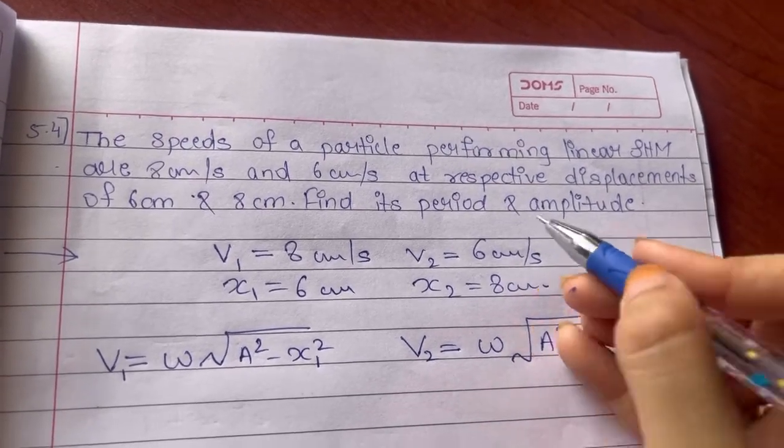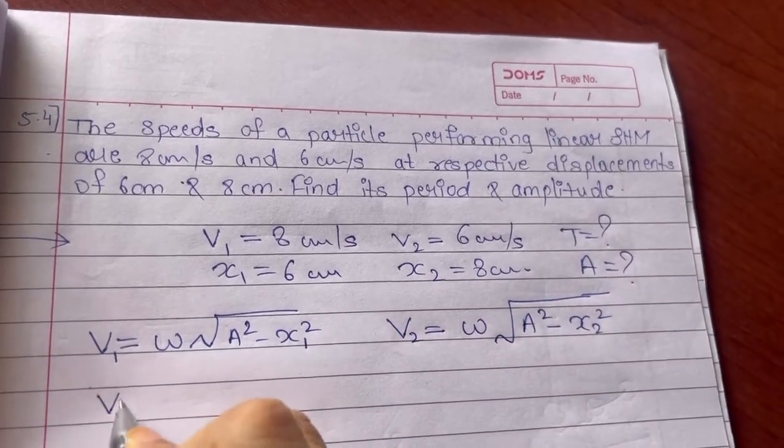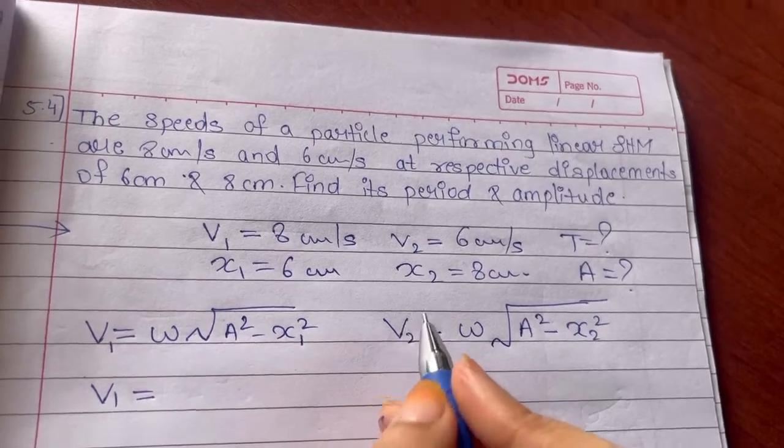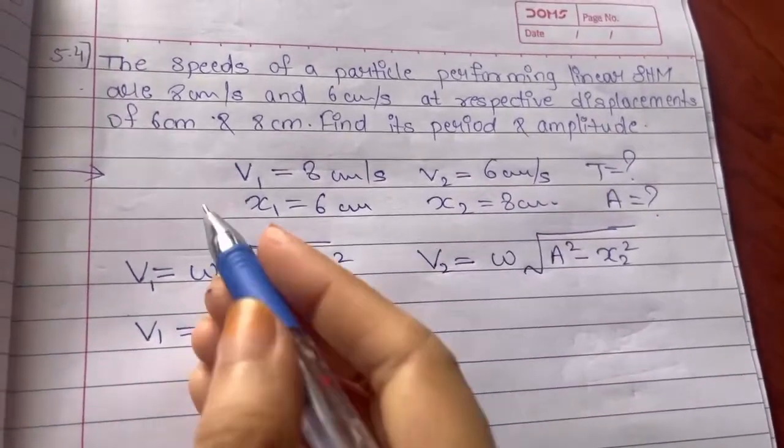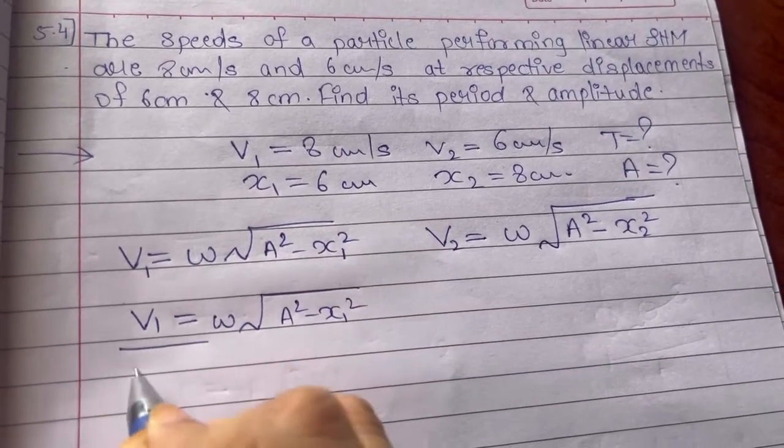Now they are asking us to calculate time period and amplitude. I will find out the ratio. When this type of given data is obtained, then it is very easy for us to go for ratio format.